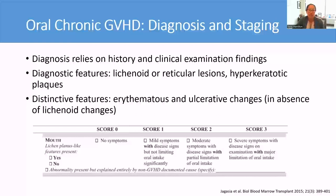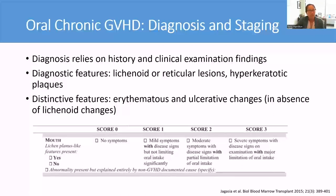Diagnosis often relies on history and clinical exam findings. Per NIH criteria, diagnostic features include lichenoid changes and hyperkeratotic plaques, while supporting distinctive features can include erythema and other ulcerative changes. Severity, per NIH criteria, is defined on a 0-3 scale based on symptoms and functional impairment.